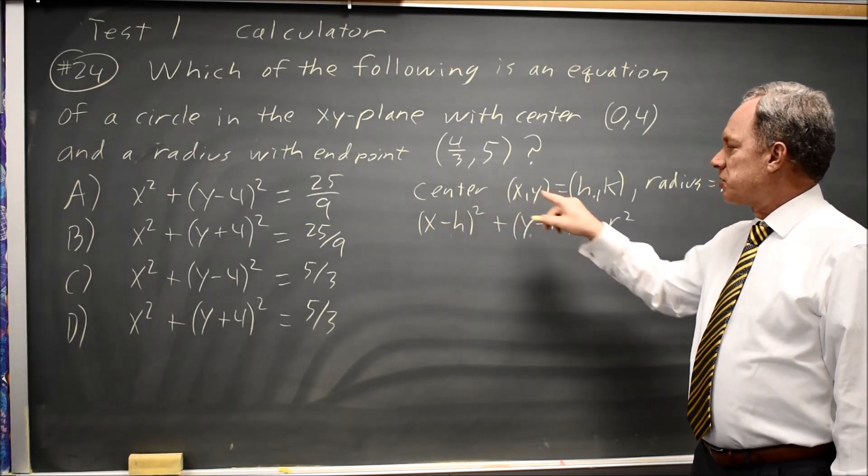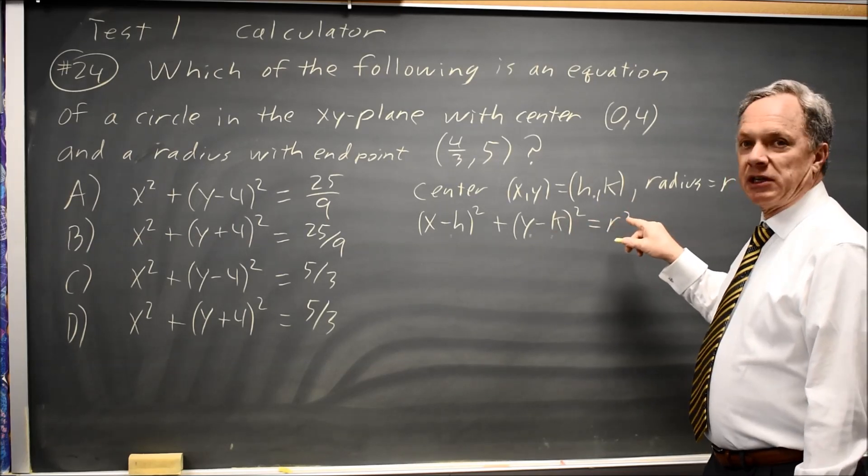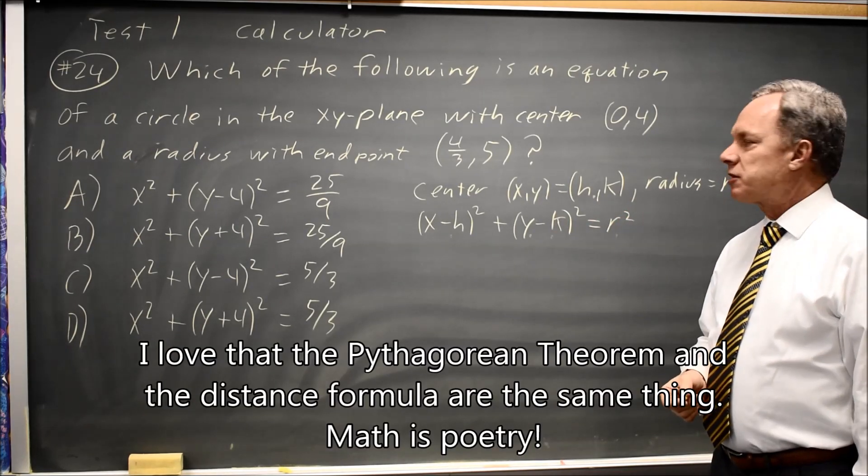So the difference in x squared plus the difference in y squared equals the total distance squared. That's the Pythagorean Theorem.